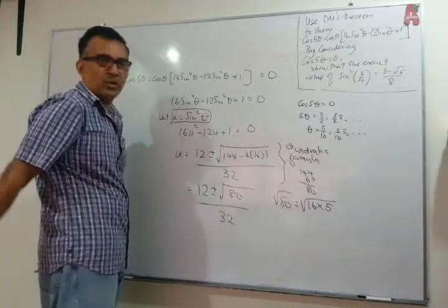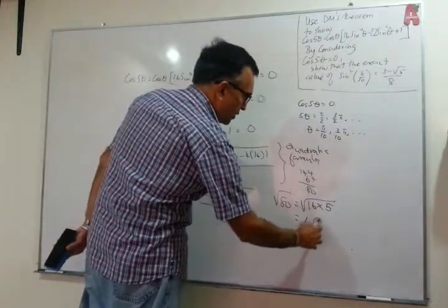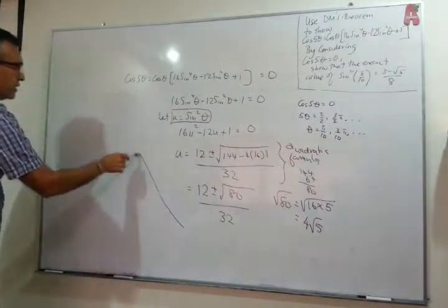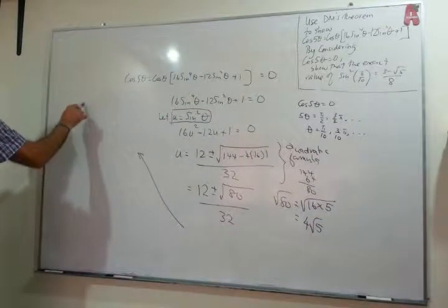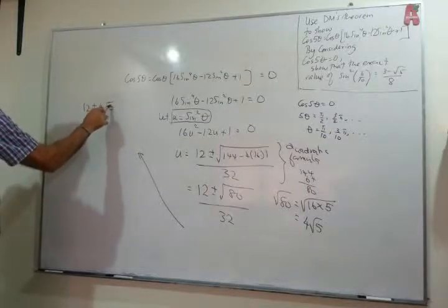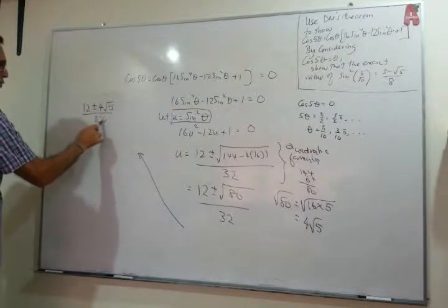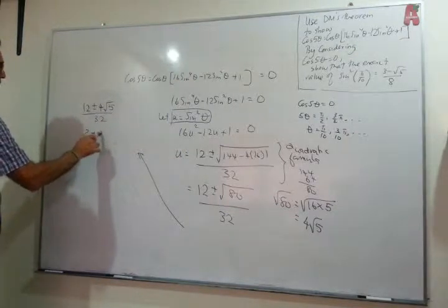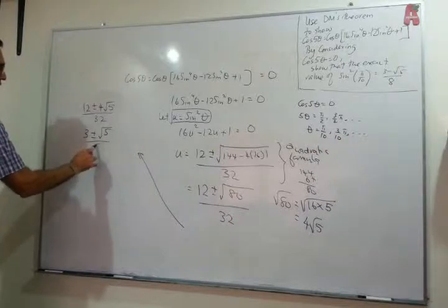Things are looking good. So I have 4 root 5. Now I'm going to continue here. So I have 12 plus or minus 4 square root 5 divided by 32. And if you divide by 4, you'll get 3 plus or minus square root of 5 over 8.